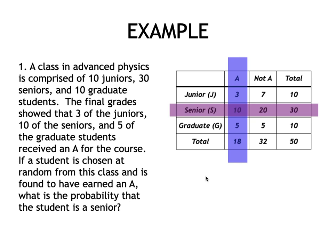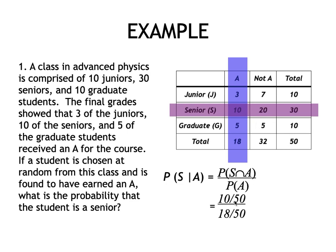Using the formula for conditional probability, we write: P(Senior | A) = P(Senior ∩ A) / P(A). From the table, the intersection is 10 out of 50, so we have 10/50. The probability that a student gets an A is 18 out of 50. Cancelling 50, we get 10/18, which simplifies to 5/9, or approximately 0.5556.